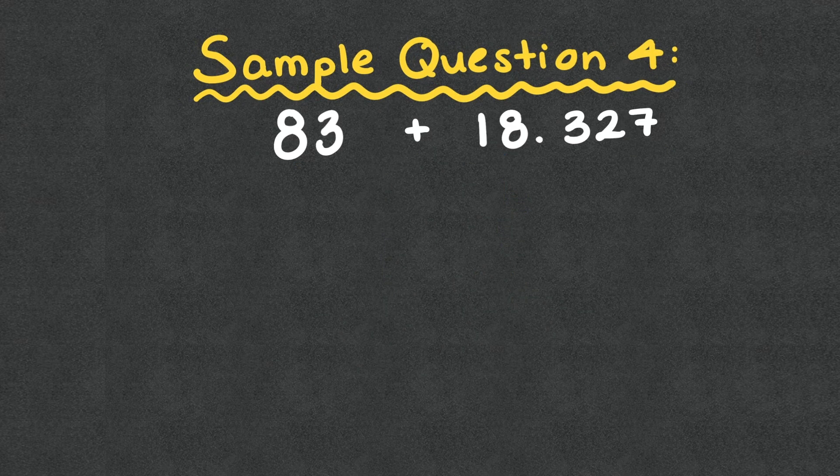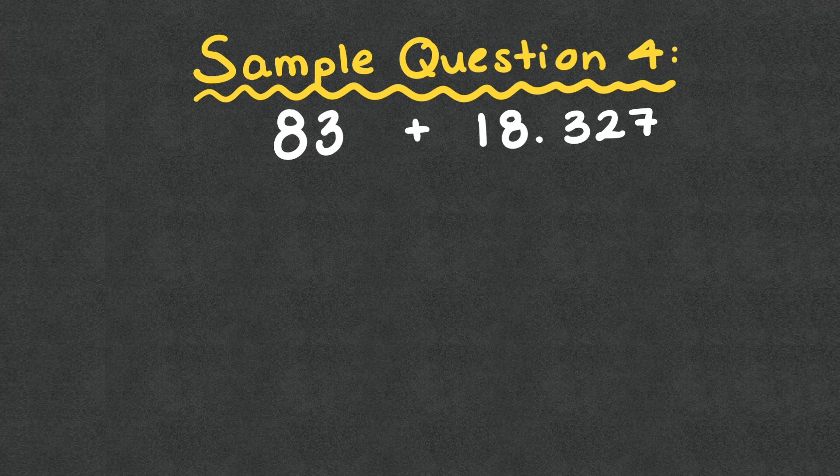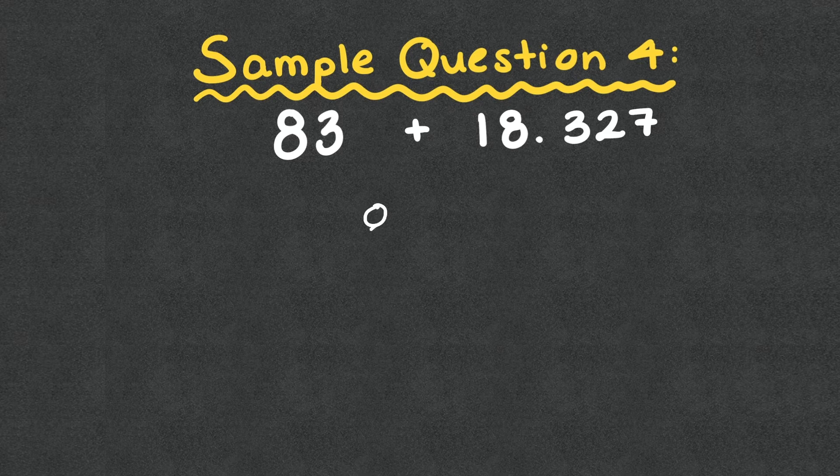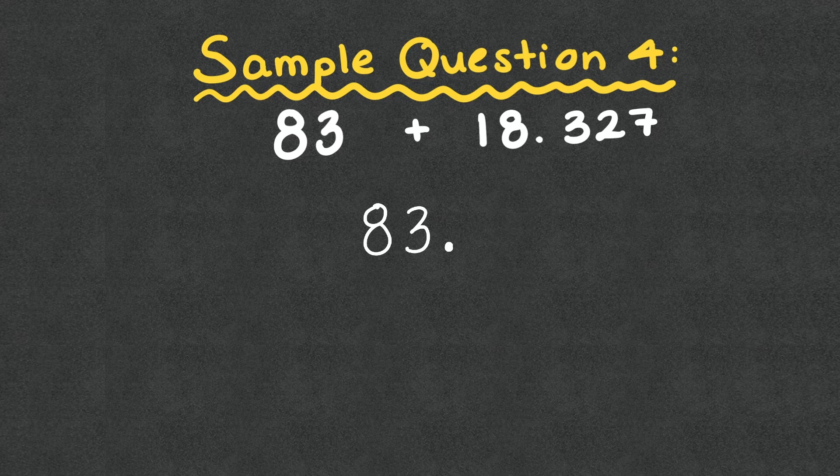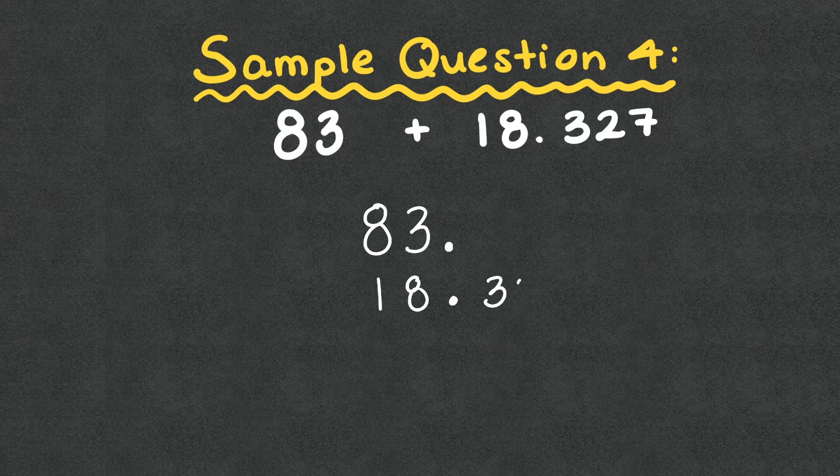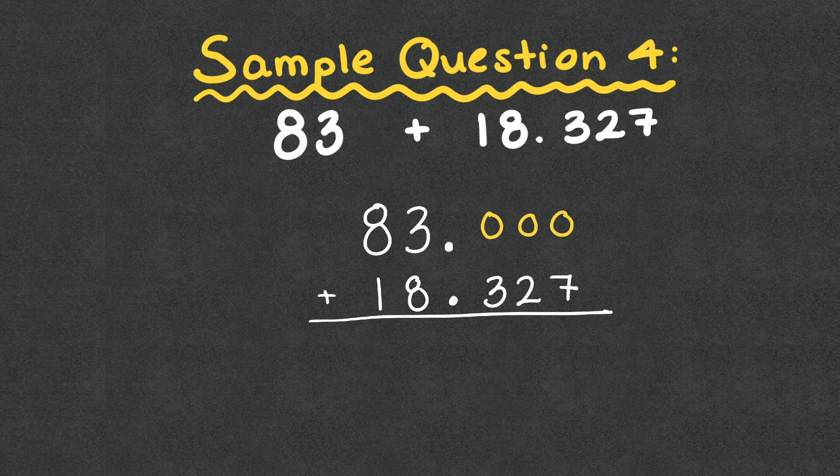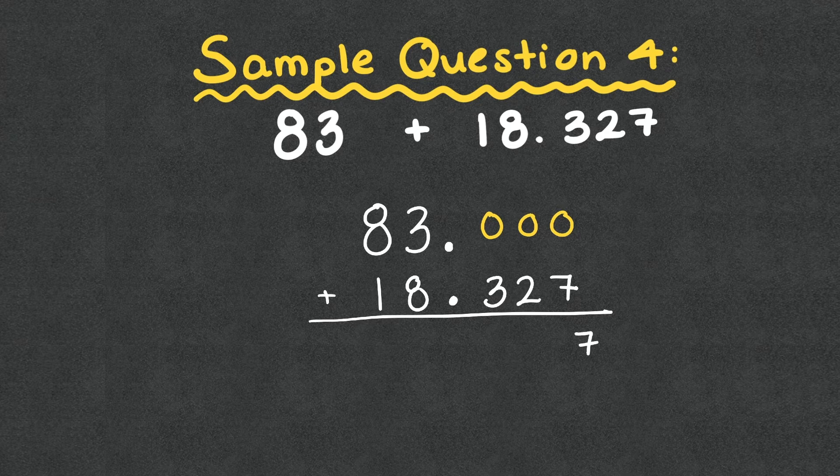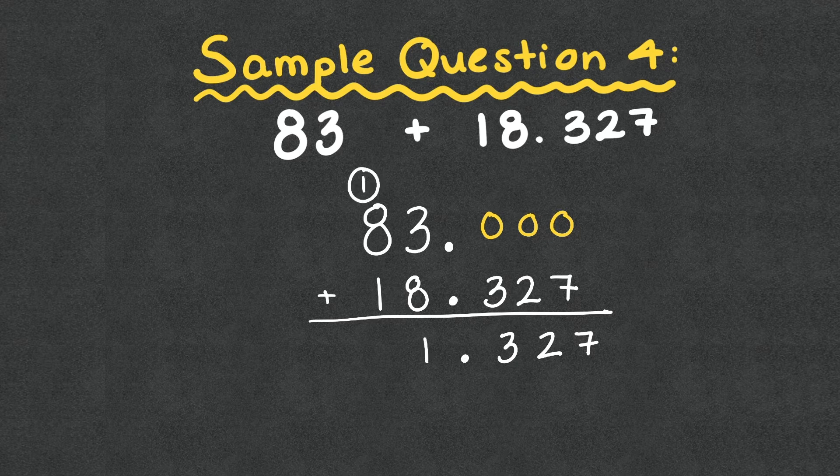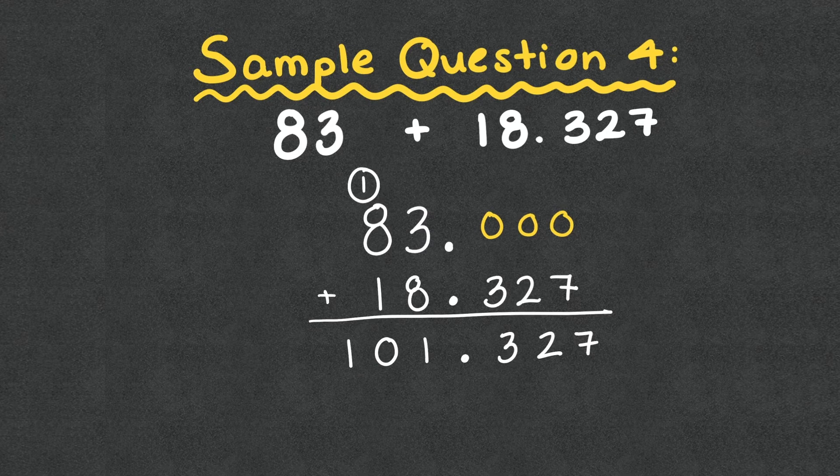Sample question 4. We have 83 plus 18 and 327 thousandths. Here, we do notice that we do have a whole number here. So just make sure when you do your whole number, we do put our decimal point at the end. That's why we went over that to make sure you know where that decimal point goes if it's not there in the number itself. Again, decimal point. Let's do 18. And then we have 327 thousandths. I'm going to double check my sign, which in this case is addition. And I'm going to put in my placeholder zeros. So now I can just add straight. So 0 plus 7 is 7. 0 plus 2 is 2. 0 plus 3 is 3. Decimal point. 3 plus 8 is 11. Drop the 1. Carry the 1. 1 plus 8 is 9. Plus 1 is 10. So my final answer would be 101 and 327 thousandths.